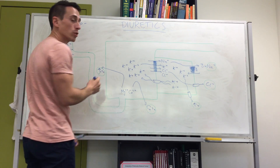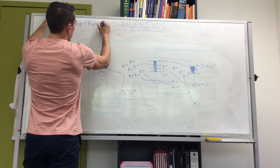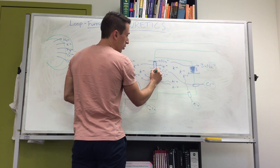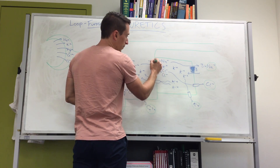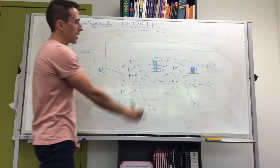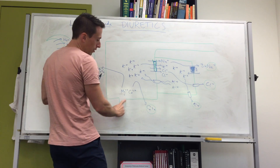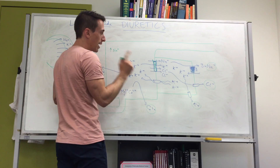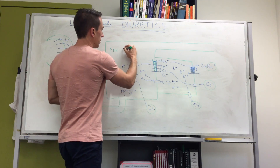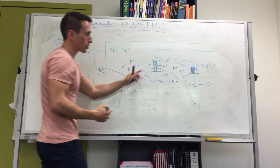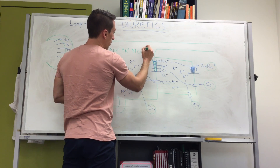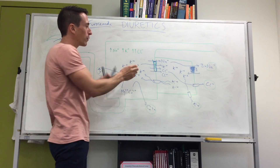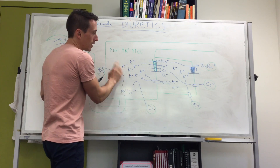Now let's talk about loop diuretics specifically. The loop diuretic we need to discuss today is furosemide, also known as frusemide. This diuretic works by blocking the sodium-potassium 2-chloride pump — it no longer works. That means sodium no longer enters the cell from the lumen, so it accumulates in the lumen; potassium no longer enters the cell, so it accumulates in the lumen; and chloride no longer enters the cell, so it too accumulates in the lumen.